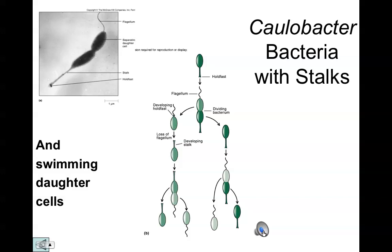Caulobacter was really one of the first stalked or unusual types of prokaryotic bacteria ever discovered. It has a little stalk that it uses to attach to the bottom of a pond or rocky surface, then it produces a budding, swimming daughter cell — a very unusual kind of life cycle as well as structural appearance. These truly were the first unique kinds of bacteria discovered several decades ago.